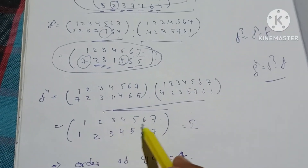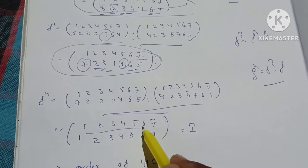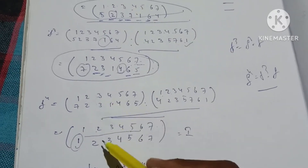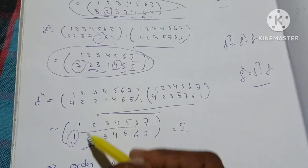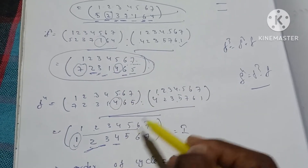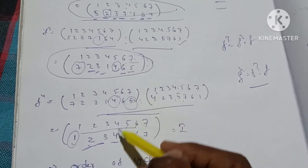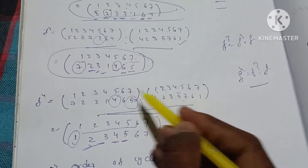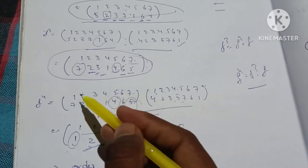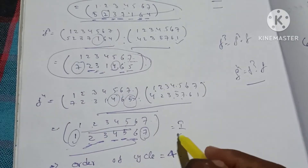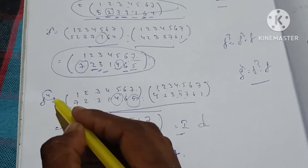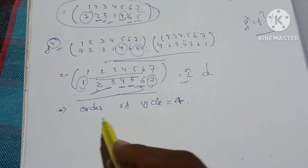F⁵ value is the same: 1, 2, 3, 4, 5, 6, 7. First: 1→4, 4→1. Next: 2→2 same, 3→3. Next: 4→4 same, 5→4. Next: 5→7. 6 is same. Remaining: 7→1. The same value is equal to the identity permutation. Therefore the order of the cycle is equal to 4.